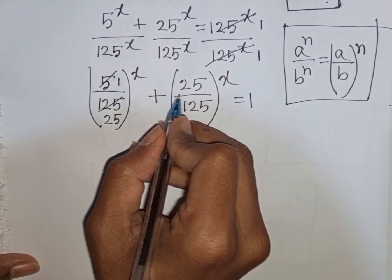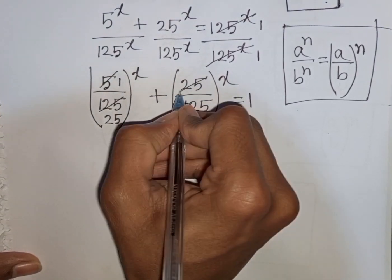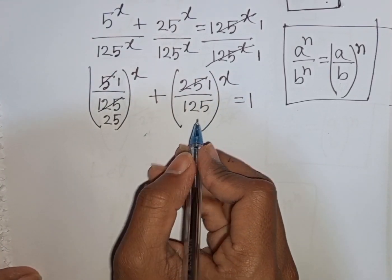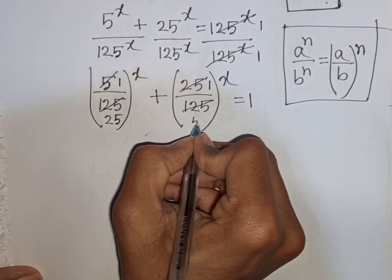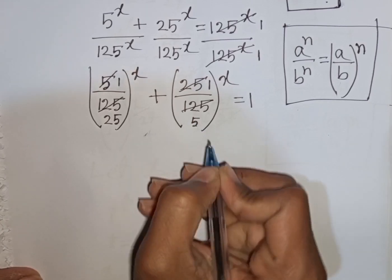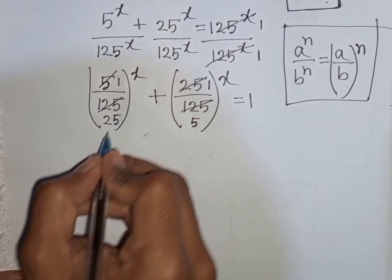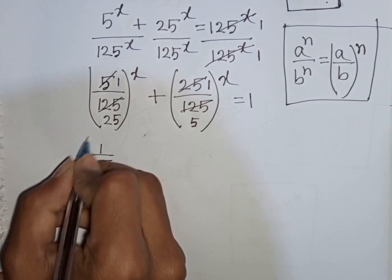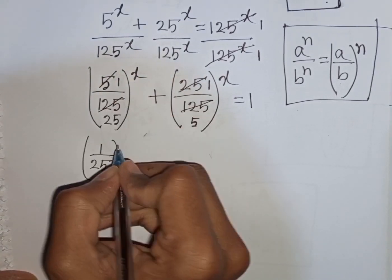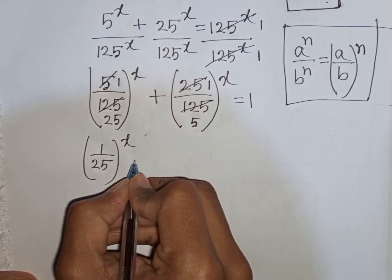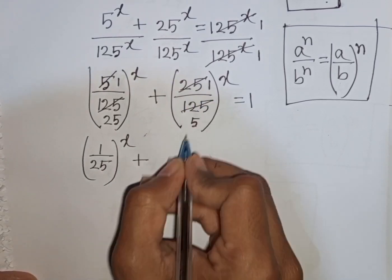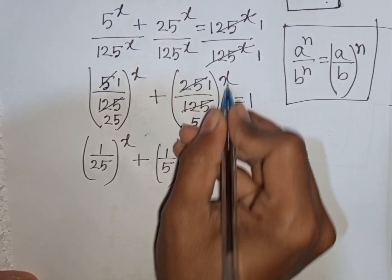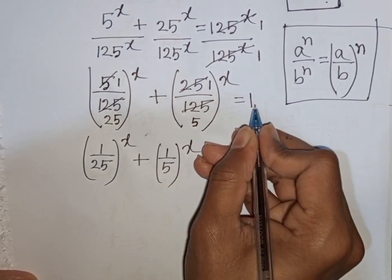Then 25 divided by 25 is 1, and 125 divided by 25 is 5. So we have (1 over 25) power x plus (1 over 5) power x is equal to 1.